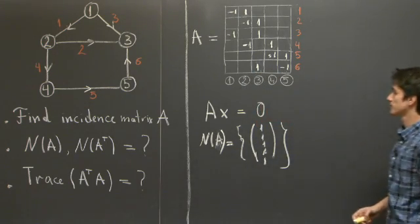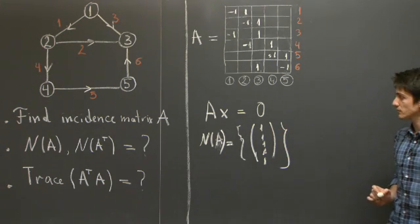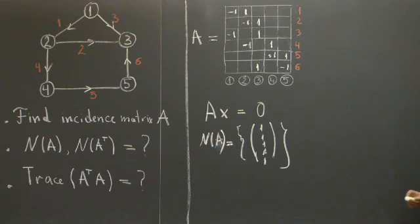OK, there are five ones here, corresponding to the five nodes. Now, what about the null space of A transpose?